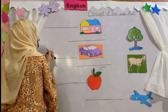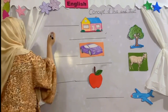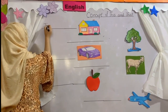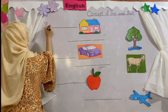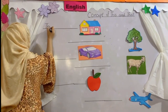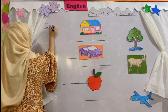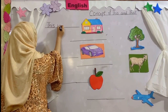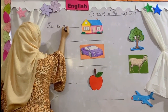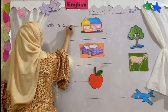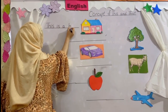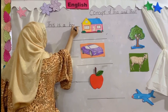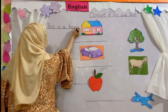Assalamu alaikum students, today our topic is the concept of 'this' and 'that.' When things are near you, we say 'this.' Suppose this is a house — the house is near us, so we say 'this is a house.'